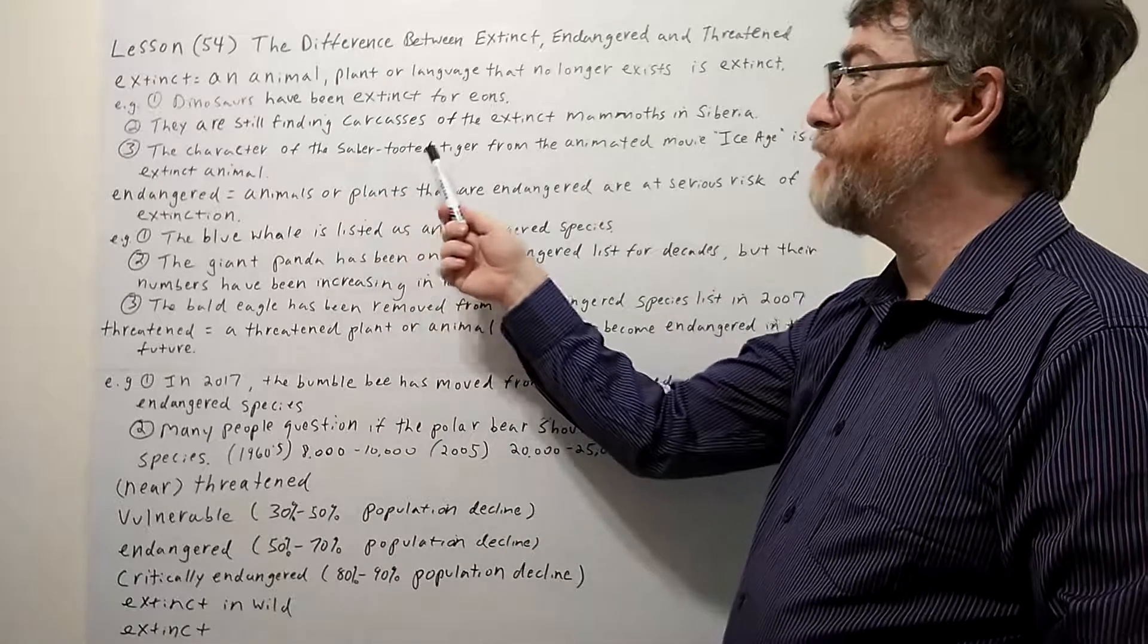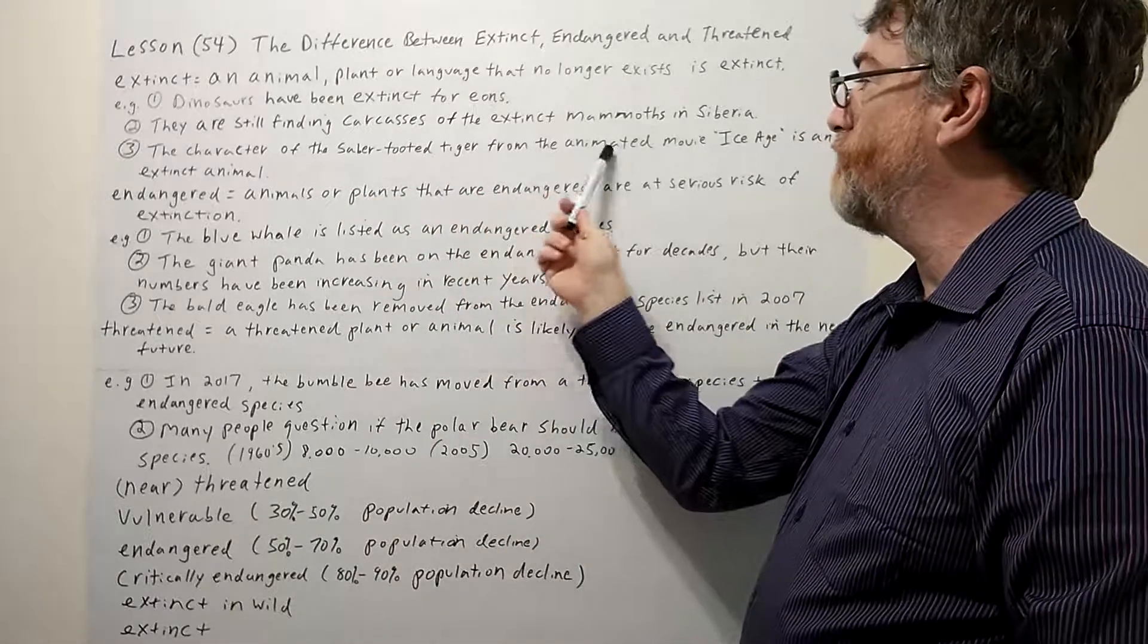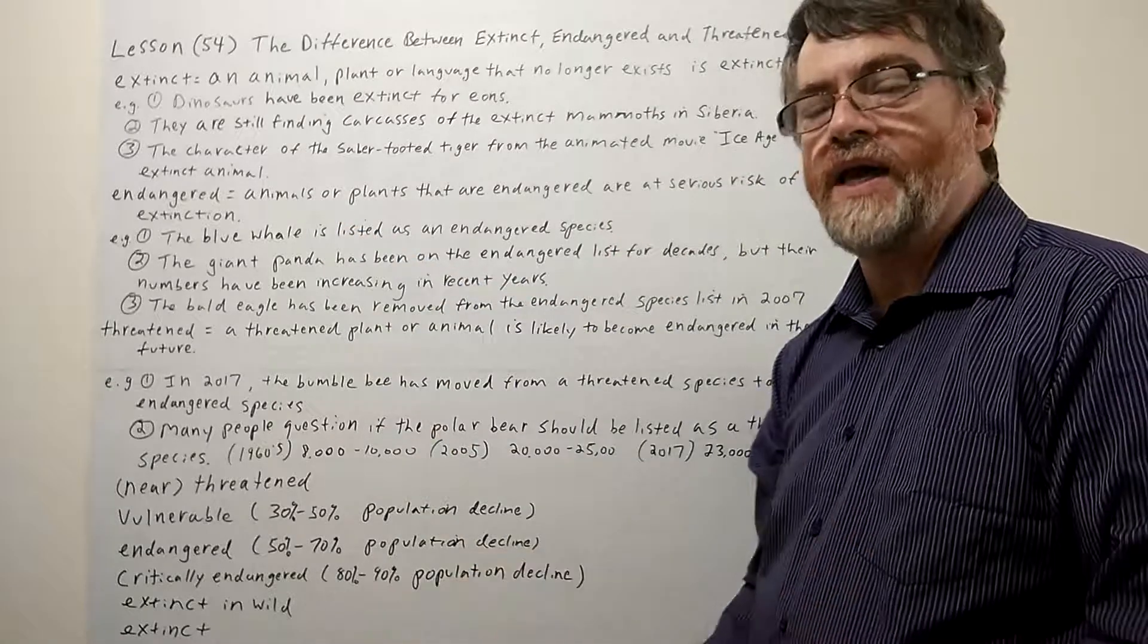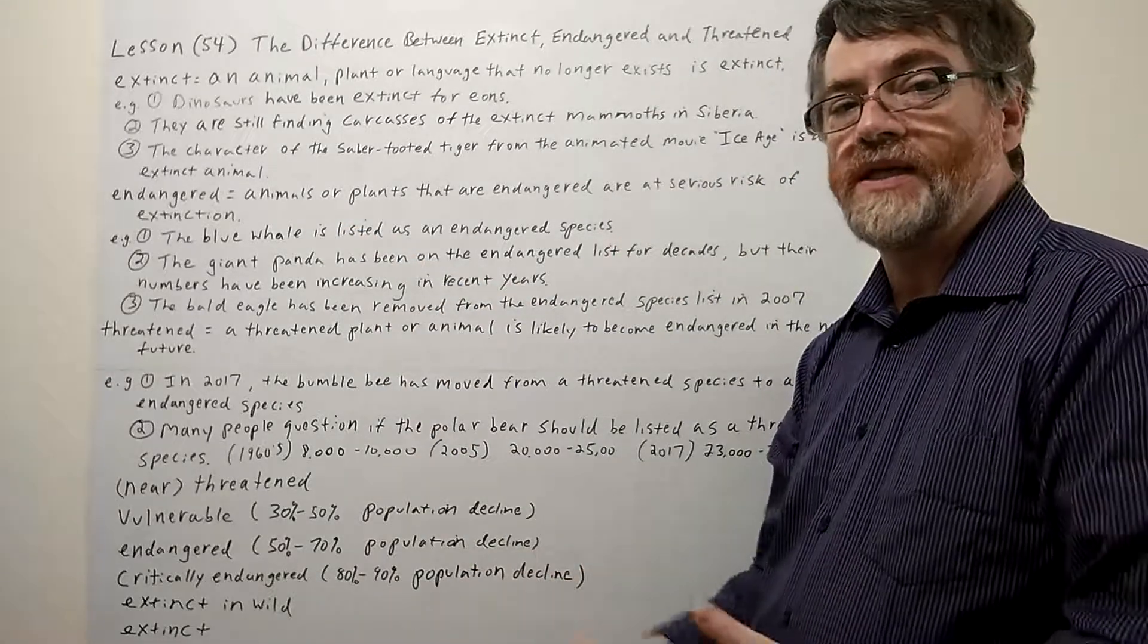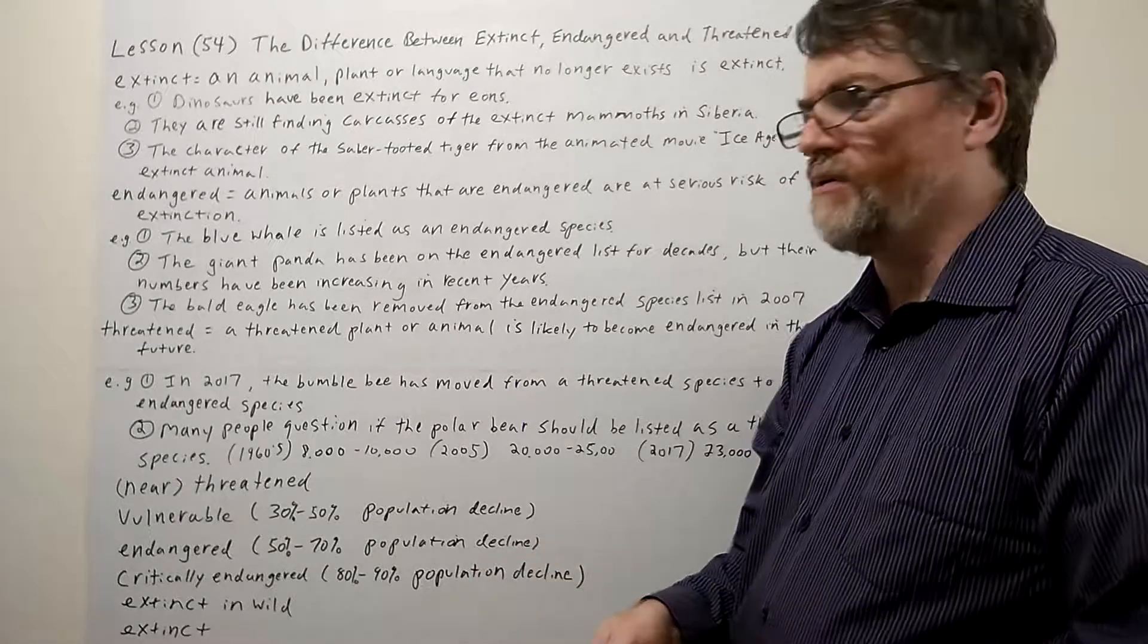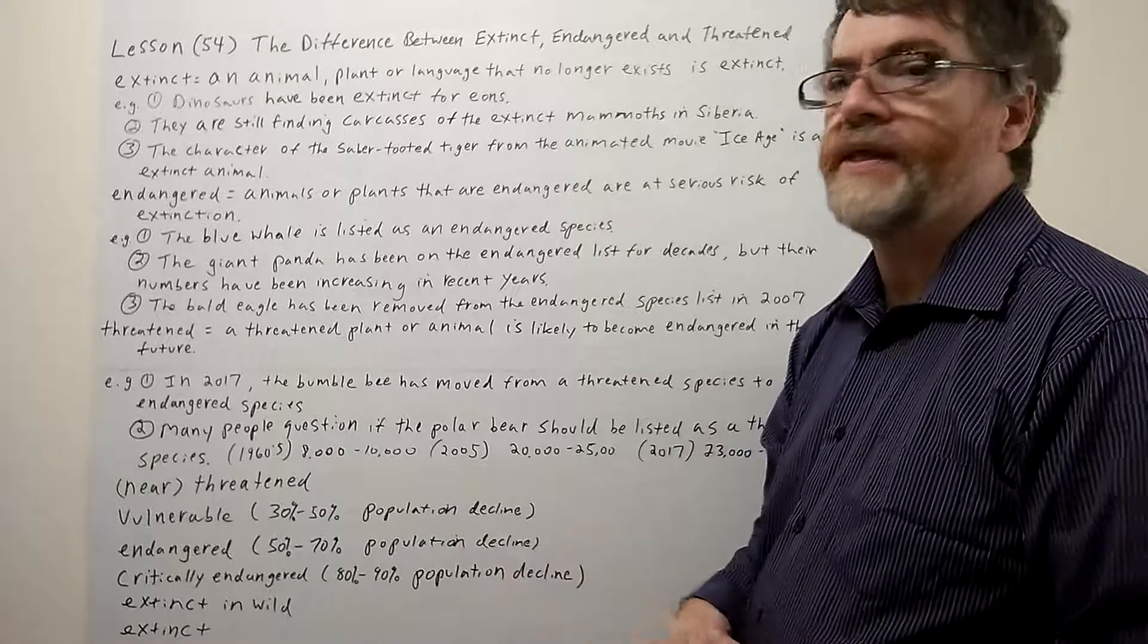Number three: the character of the saber-toothed tiger from the animated movie Ice Age is an extinct animal. Yeah, so if you want to think about some extinct animals, you can think of the cartoon movie Ice Age. They've had several of them now, I think they're up to like four or five or six something like that.